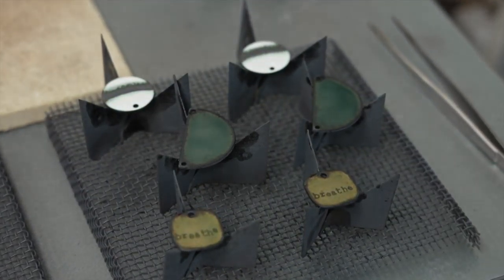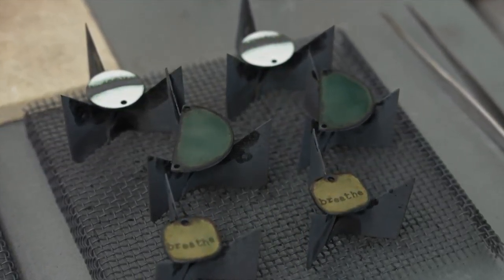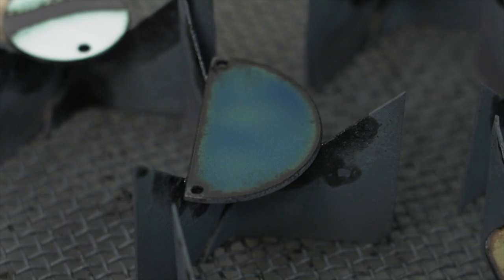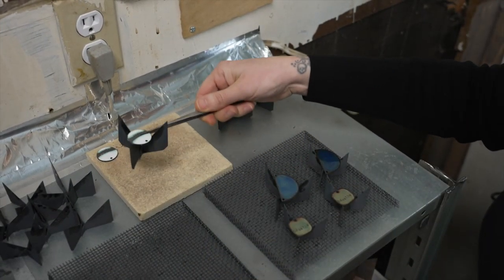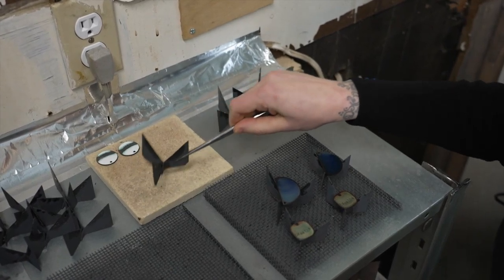Because there is so much heat, the copper oxidizes before the enamel melts creating additional design effects. Using tweezers, each piece is placed on a stone tile to continue cooling.